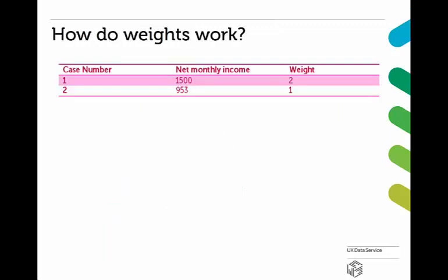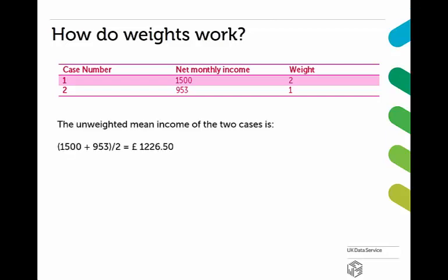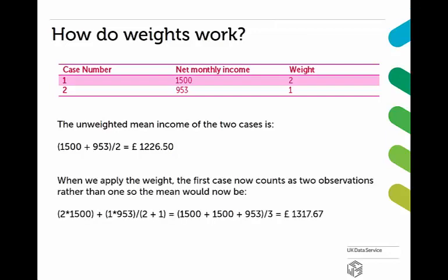So how do these weights work? We can see a very simple example with just two cases here. In unweighted analyses, each of these units or cases are counted as one observation. In weighted analyses, each case can represent any number of observations, and the number of observations the case counts as is given as a weighting variable or weight. The unweighted mean income for these two cases is calculated like this. However, when we apply the weight, the first case now counts as two observations rather than one, and so the weighted mean income is calculated as such.